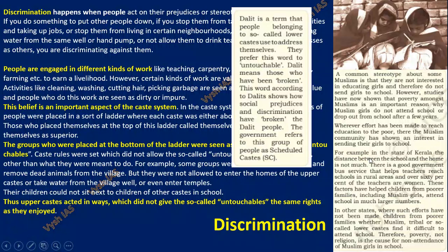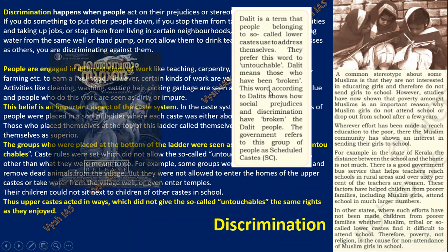There is a term you should know for this Scheduled Caste group. The government calls them Scheduled Caste, but the actual name they want to be called themselves is Dalit. Dalit is a term people belonging to the so-called lower caste use to address themselves. They don't like the word untouchable. Dalit means 'broken,' and they are broken because of all these prejudices and discrimination. So there are three different names for the same category of people: untouchable, Scheduled Caste, and Dalit.